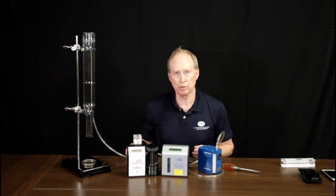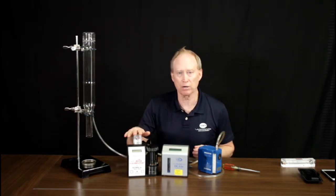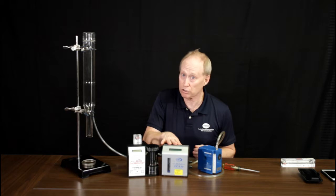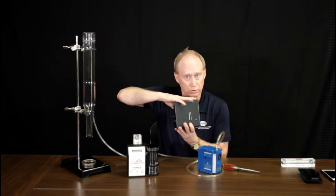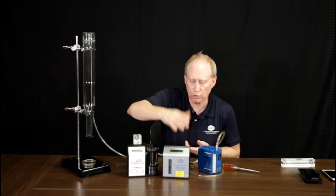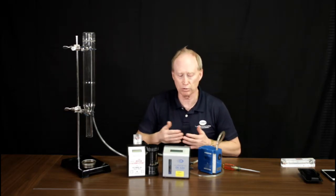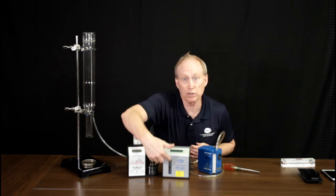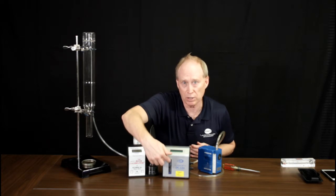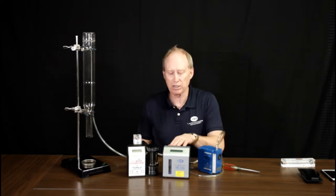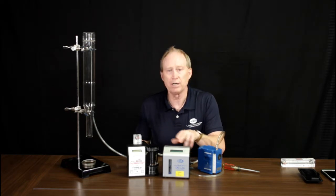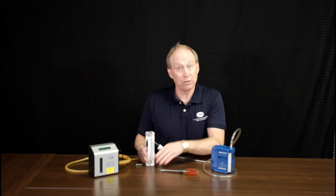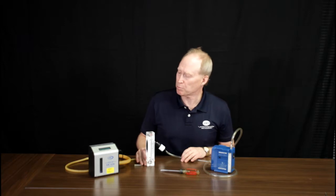Here are two other standards we use to calibrate our rotometers, or secondary standards, to indicate true flow rate. The one on this side is a dry cal. It's an older one with an RS-232 serial port on the back; newer ones would have USB or Bluetooth, but the clockwork inside is pretty much the same. The way this operates is by displacing a piston in a precision cylinder instead of a soap bubble. You can just hit read and it'll read each one. The setup with the dry cal is done the same way as with the bubble buret.